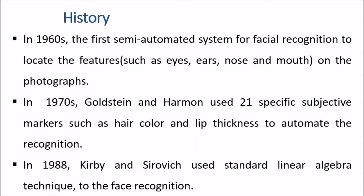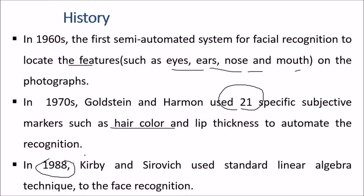In the 1960s, the first semi-automated system for facial recognition was developed to locate features such as eyes, ears, nose, and mouth on photographs. In the 1970s, Goldstein and Harmon used 21 specific subjective markers such as hair color and lip thickness to automate recognition. In 1988, Kirby and Sirovich applied standard linear algebra techniques to face recognition.